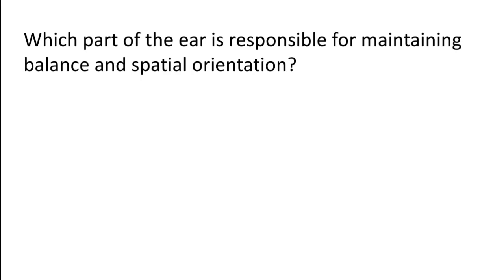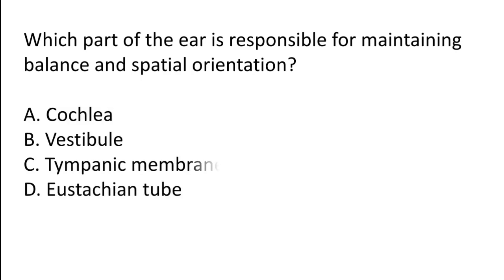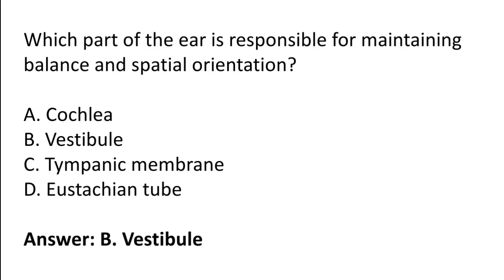Which part of the ear is responsible for maintaining balance and spatial orientation? Options: Cochlea, Vestibule, Tympanic membrane, Eustachian tube. The correct answer is option B — the Vestibule is the part of the ear responsible for maintaining balance and spatial orientation.